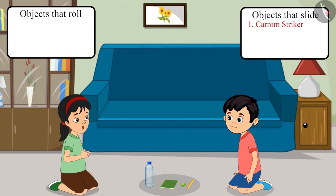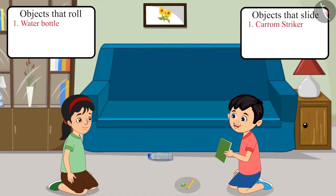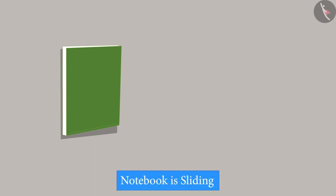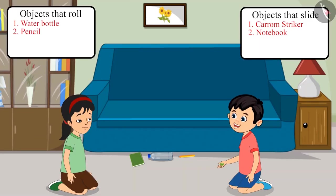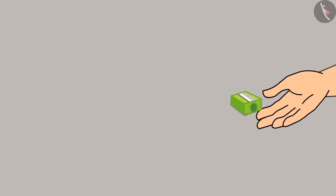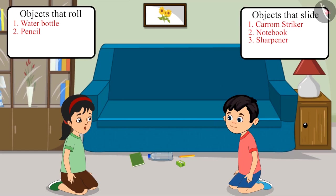Come on, let's push this water bottle. See, it's rolling! Now let's try to push this notebook — it's sliding. It's a pencil now, and it is continuously rolling. Now let's push the sharpener — it is sliding too.